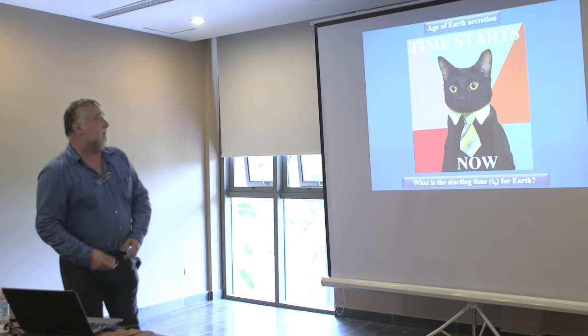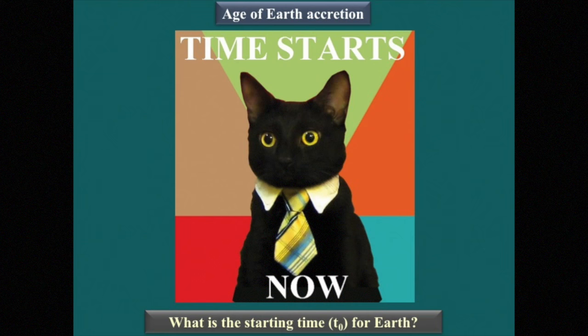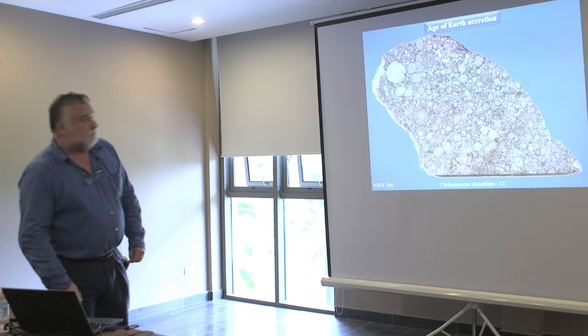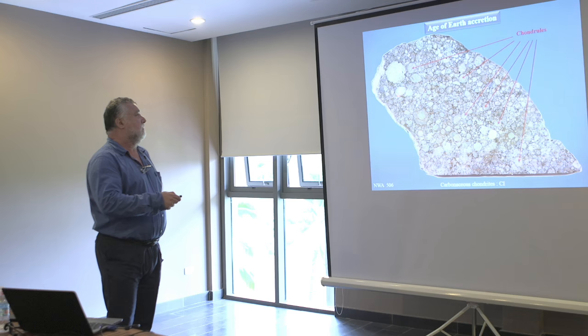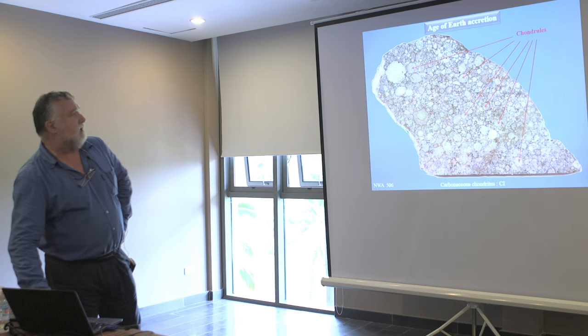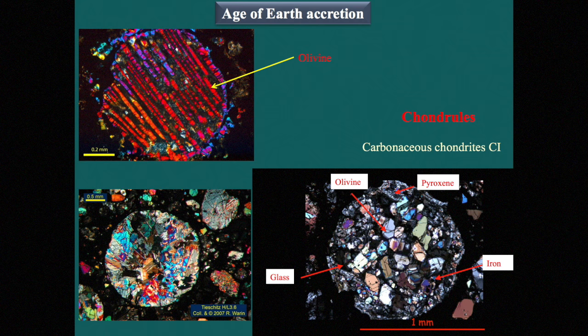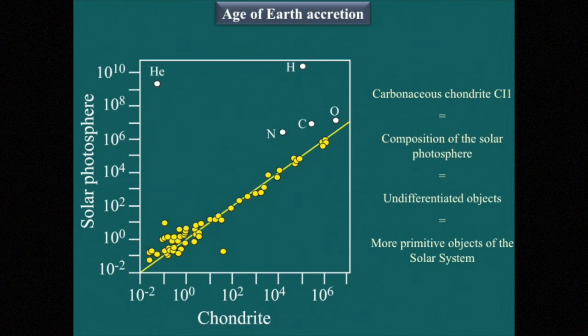One of the problems is to know what is the starting point in the history of the Earth. You probably know this kind of meteorite — these are CI chondrites, and they consist of chondrules, which are these rounded-shaped pieces. These chondrules contain olivine but also some minerals such as pyroxene, iron, and glass. This kind of chondrite is very interesting because their composition, if we accept the light elements, when plotted against the solar composition, is the same.